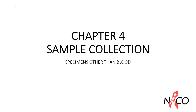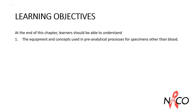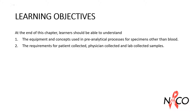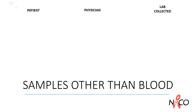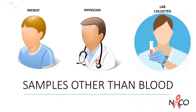Chapter 4: Sample Collection — Specimens Other Than Blood, Part 1: Patient Collected Specimens. At the end of this chapter, learners should be able to understand the equipment and concepts used in pre-analytical processes for specimens other than blood, the requirements for patient-collected, physician-collected and lab-collected samples, and the best practices to avoid errors. Samples other than blood can be patient-collected, physician-collected and lab-collected samples.